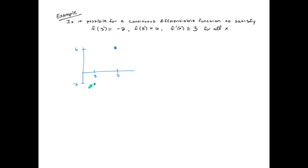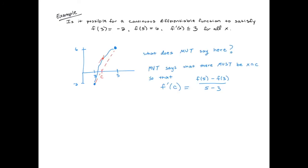Is it possible that a continuous differentiable function satisfies: f(3) = −2, f(5) = 6, and f'(x) ≤ 3 for all x? We've got f(3) = −2 and f(5) = 6, looking at something that's continuous and differentiable. The Mean Value Theorem definitely applies here. There must be some point in between x = 3 and x = 5 where the slope of the tangent at x = c equals the slope of the secant between x = 3 and x = 5. I know f(5) = 6 and f(3) = −2, so f'(c) = (6 − (−2)) / (5 − 3) = 4.